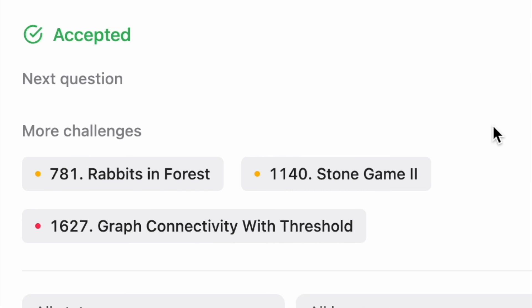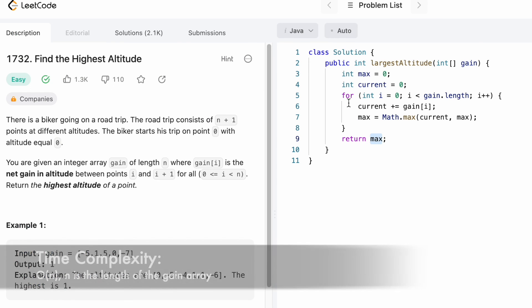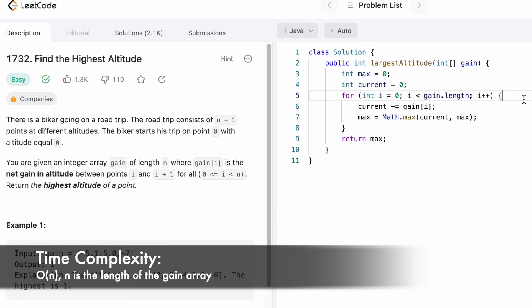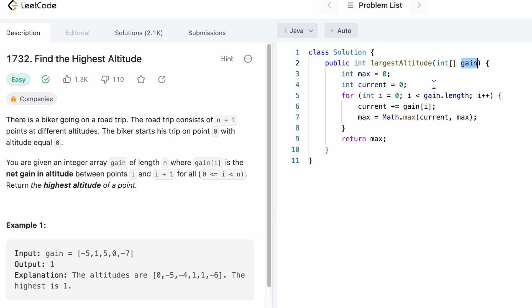The time complexity of this approach is O of n where n is the length of the gain array, and the space complexity is constant O of 1 because we are not using any extra space to solve this question. That's it guys, thank you for watching, and I'll see you in the next video.